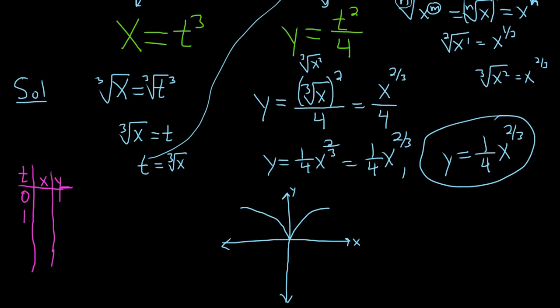So when t is equal to 0, we look here. And so we get x equals 0 cubed. So we get x equals 0. And we also get y equals 0 because we get 0 over 4 looking up here. So we are here. So this point here at the origin corresponds to t equals 0.